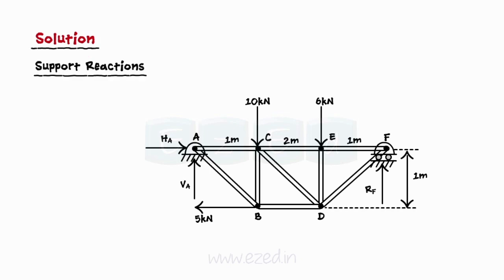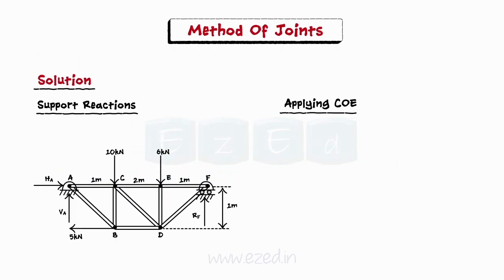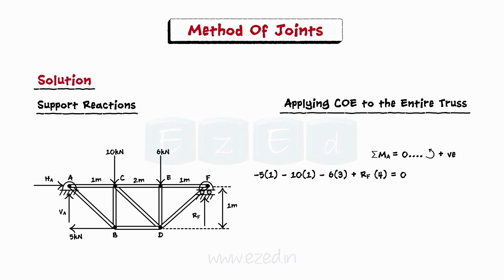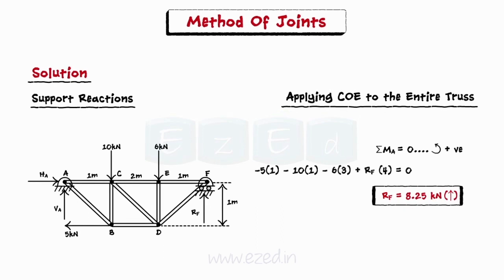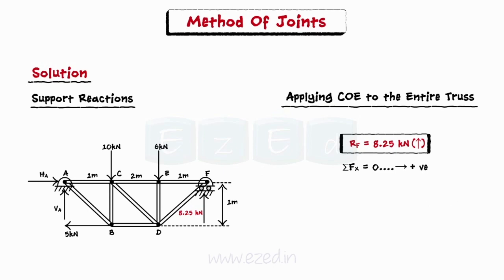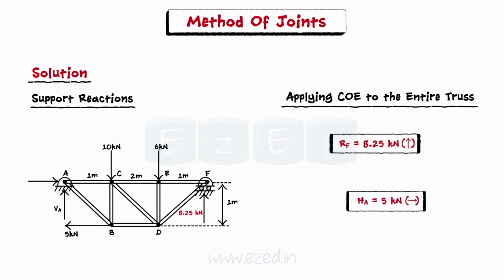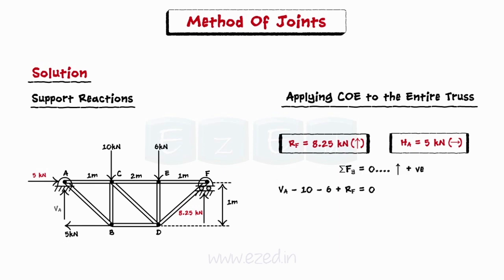We will first find the support reactions by applying conditions of equilibrium to the entire truss. We equate the summation of moments of all forces about point A to zero, giving the normal reaction at point F as 8.25 kN. Then, equating the summation of all forces in the x direction to zero, we find the horizontal component of the reaction at support A to be 5 kN. Equating the summation of all forces in the y direction to zero, the vertical reaction at support A is 7.75 kN.